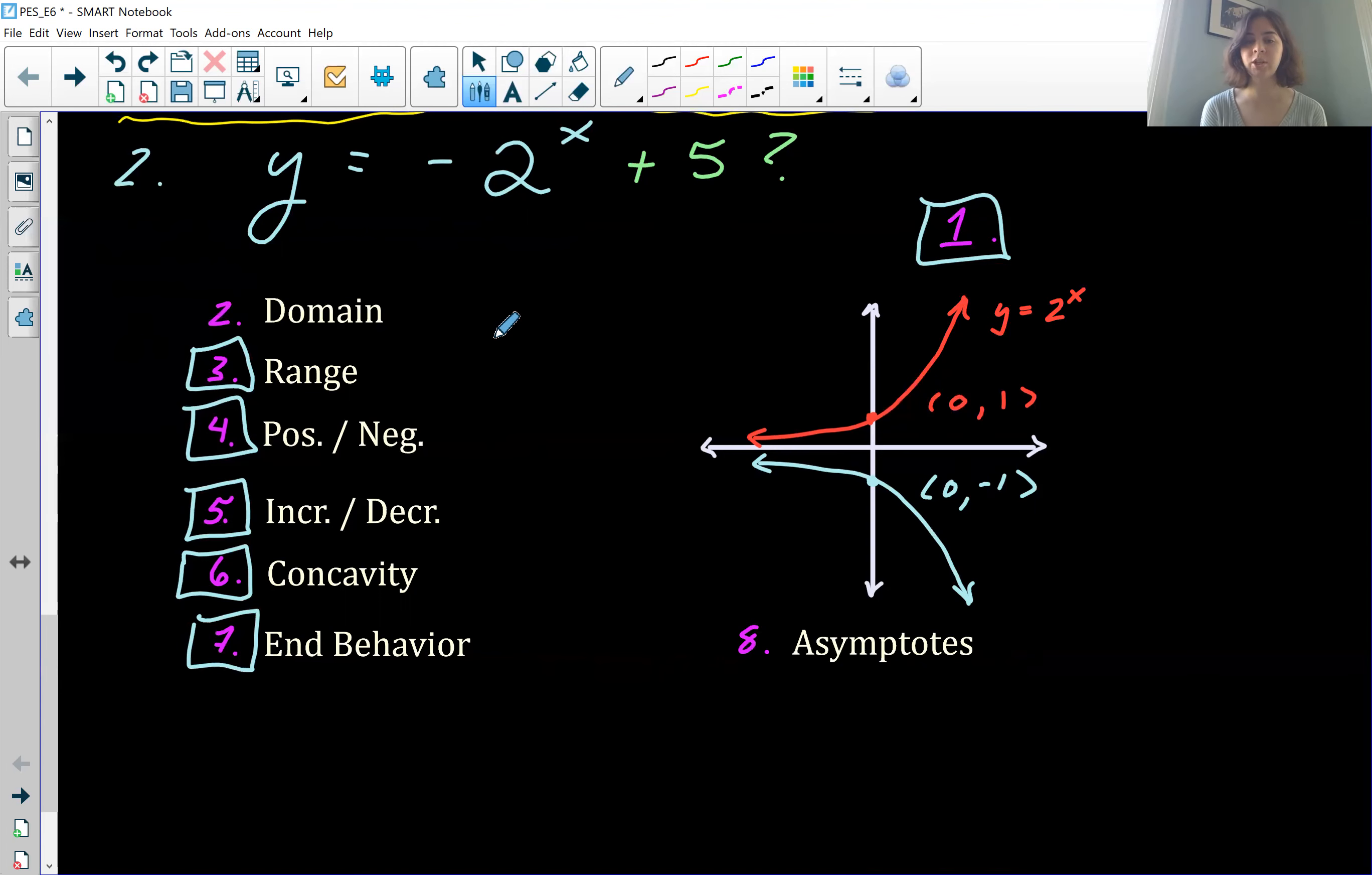So what's going to change here are the intercepts. Definitely. Because we're going to multiply that one right here by negative one to get negative one. And so our intercept is going to flip down there. Domain is the same. We can plug in anything. Range is going to change because now we've flipped it over on the other side and that changes our y values a lot. And we can see that we're still approaching zero, but now all of our y values are negative. So our range is going to be from negative infinity to zero.